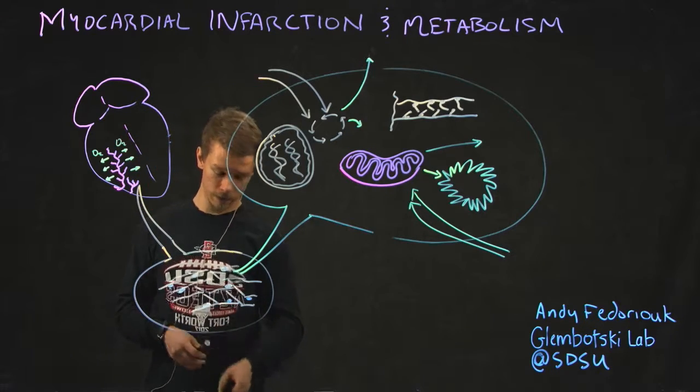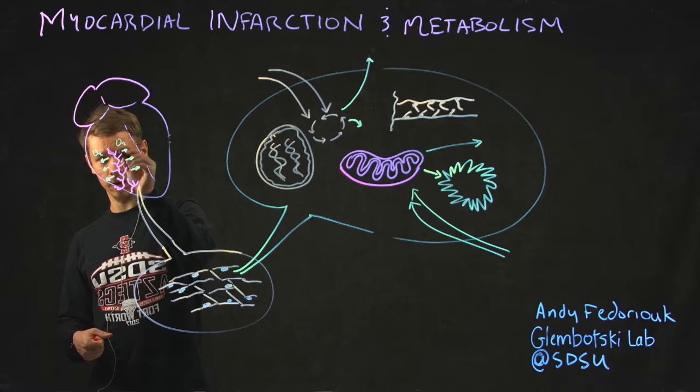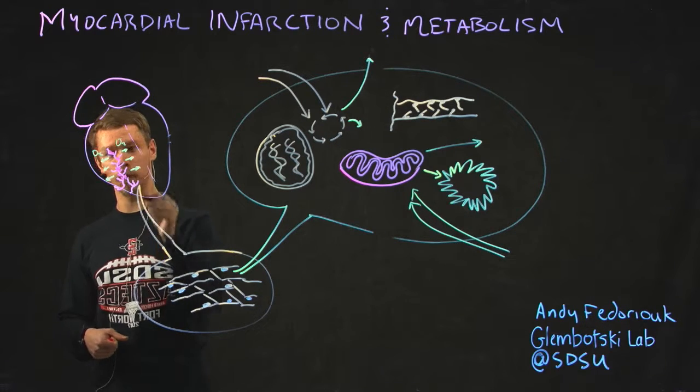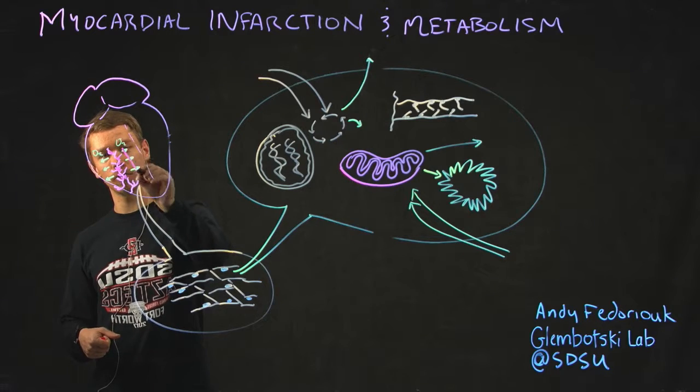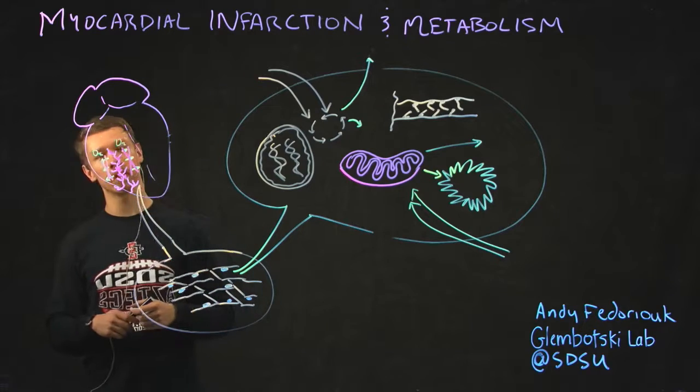Problem happens though when your vessels get all clogged up, there's a bunch of junk in your vessels and oxygen doesn't diffuse properly. So at some point there's too little oxygen and you get hypoxia, which is loss of oxygen, and ischemia, which is loss of nutrients.